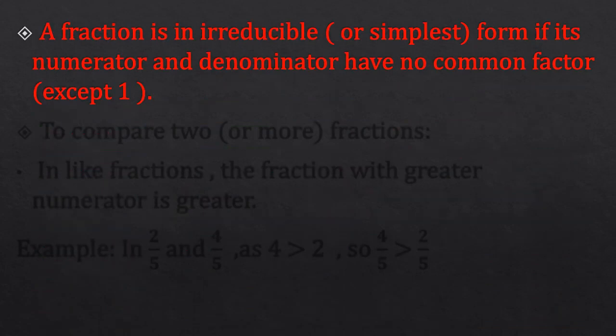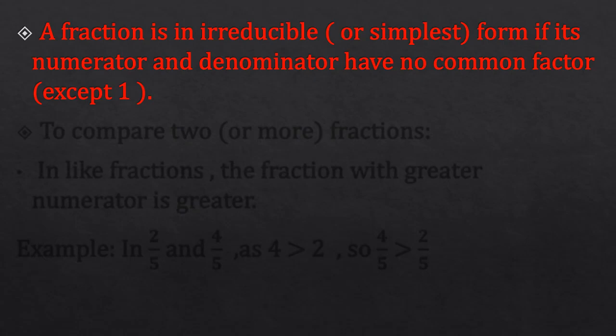A fraction is in irreducible or simplest form if its numerator and denominator have no common factor except 1. There are two methods to convert a fraction into its simplest form: the HCF method and the factorization method. Normally we follow the factorization method.